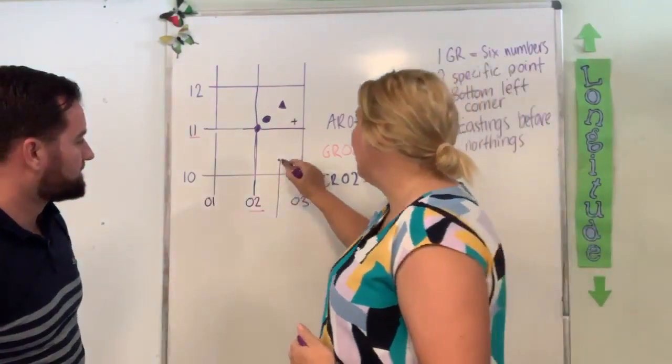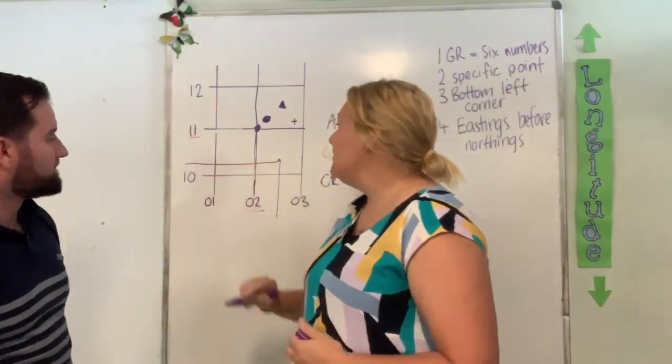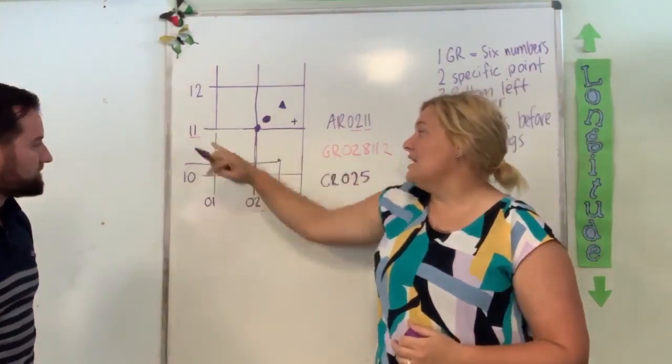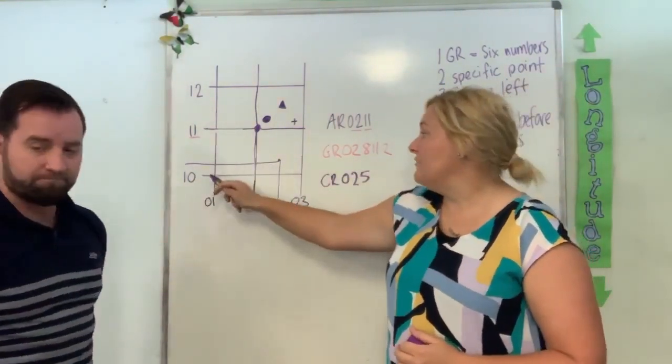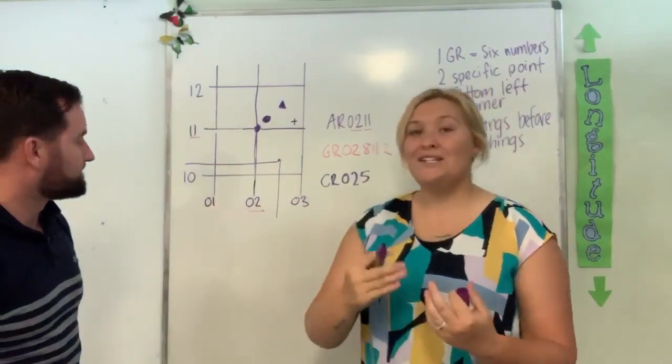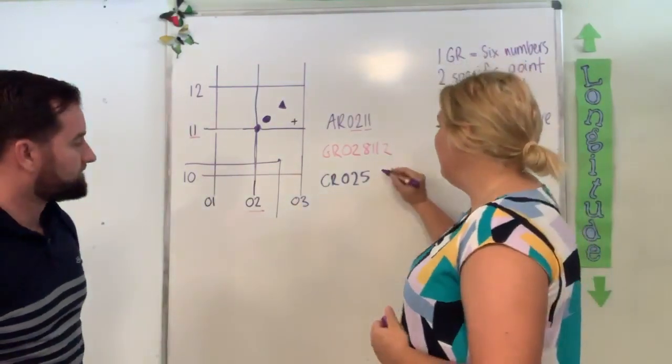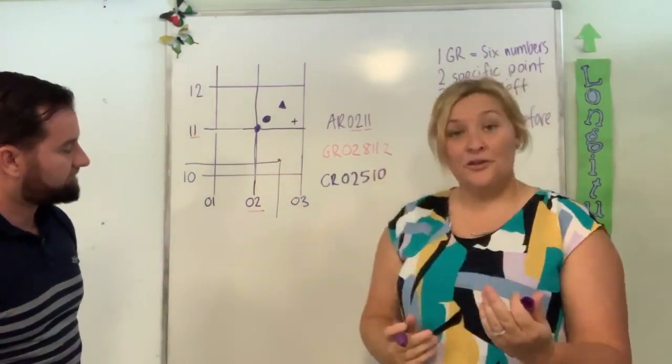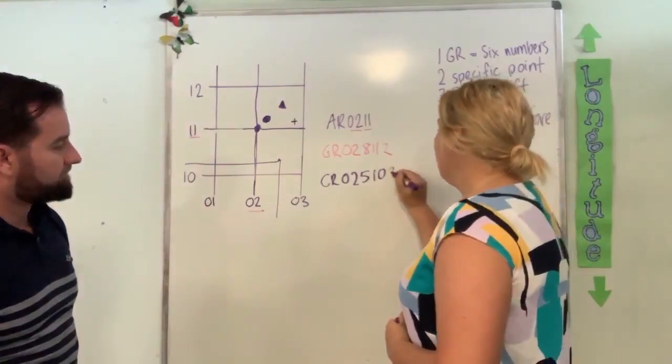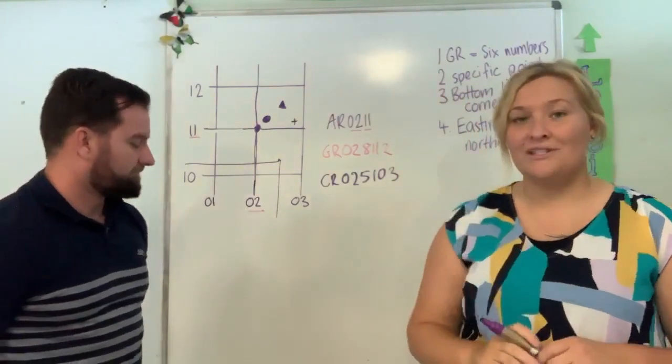We're going to do the same concept over here with our northing. So we're going to draw across. And we're just going to look at it as, alright, here's 10 and here's 11. How far between them is it? And this one here would be about 10.3. So when we write it up, we'll write 01. Ignore the decimal point and write 3. So we end up with a grid reference of 025103.